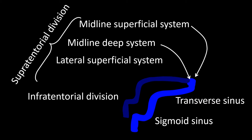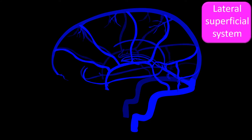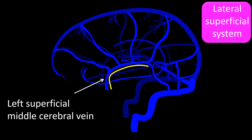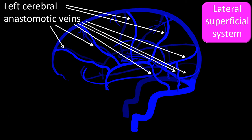The third system of the supratentorial division is the lateral superficial system, which drains to the transverse sinus. This system is anchored by the superficial middle cerebral vein. It is complemented by anastomotic veins: the cerebral anastomotic veins run over the cerebral hemisphere connecting the superficial middle cerebral vein to the superior sagittal sinus, draining most of the cerebral lateral surface of the cerebral hemispheres.